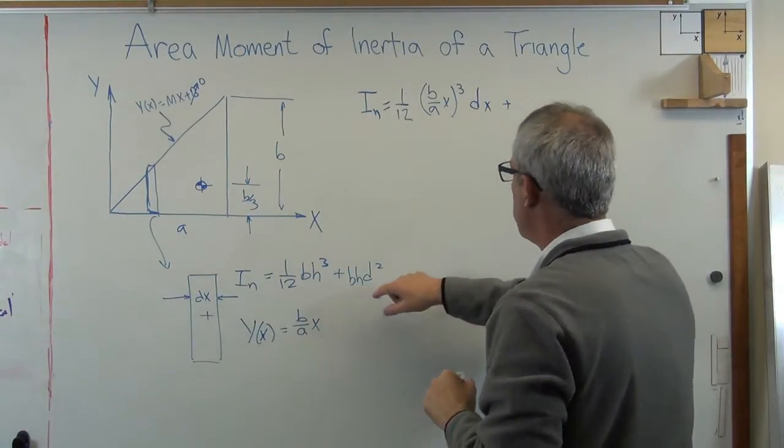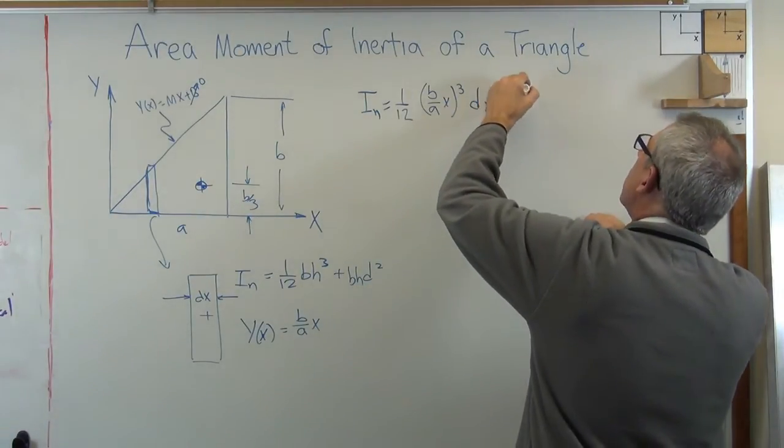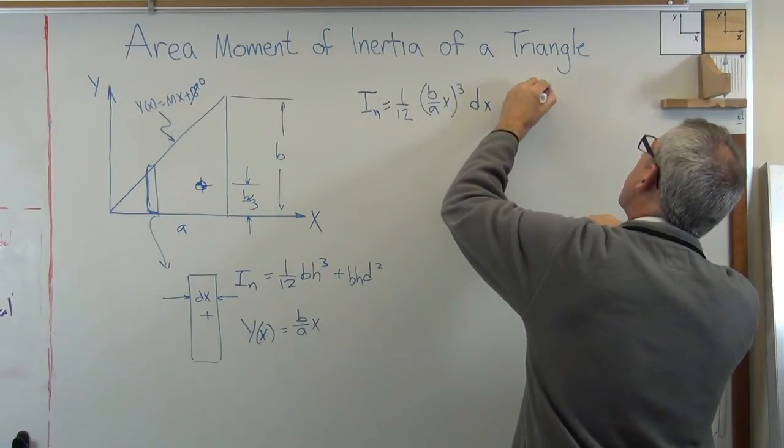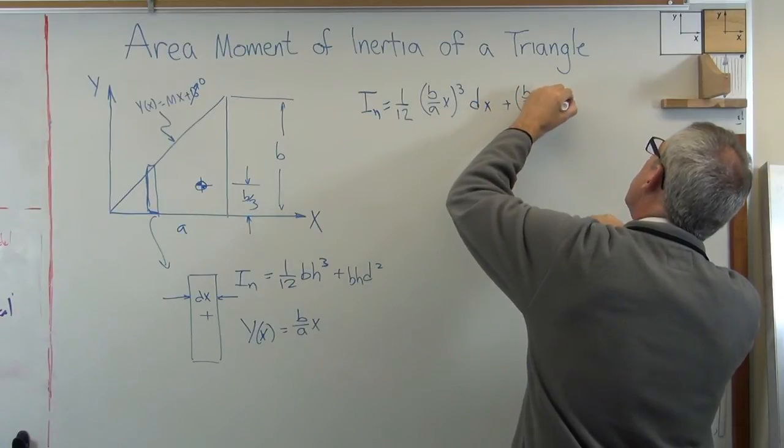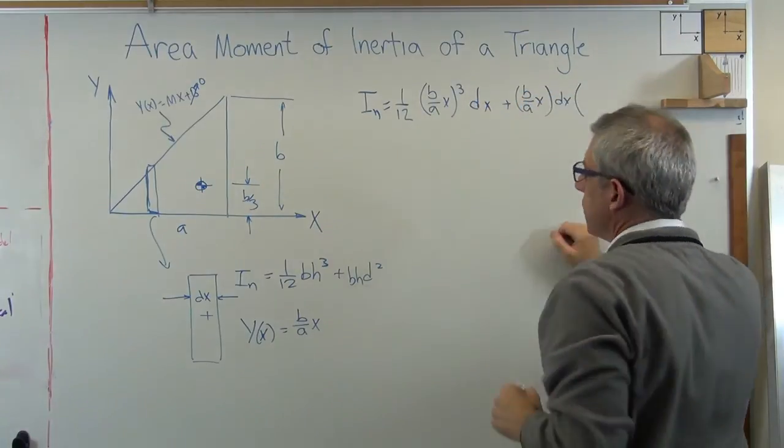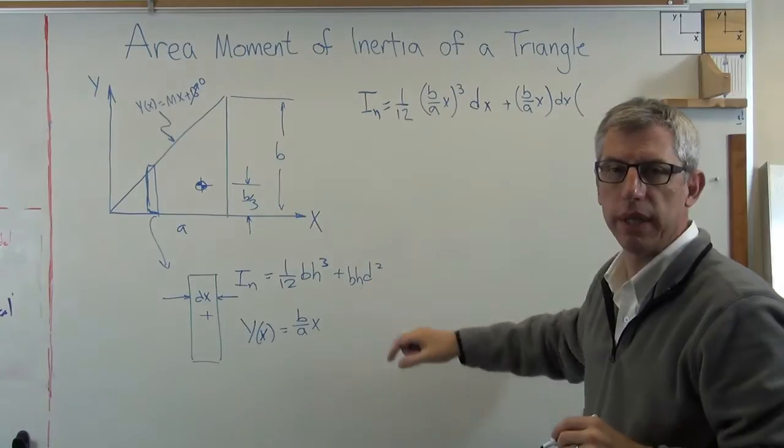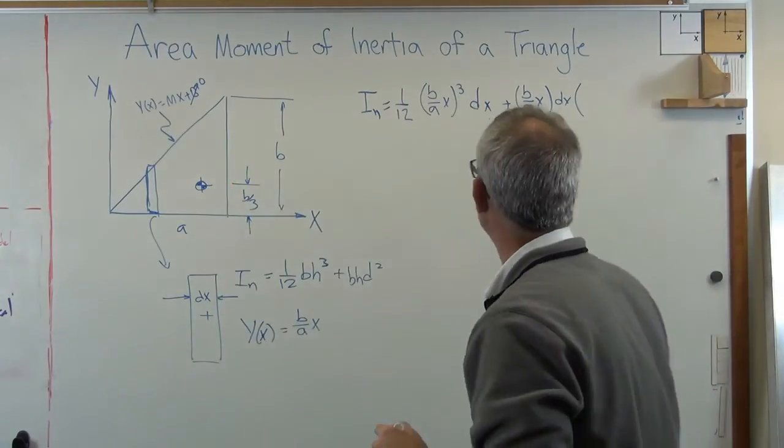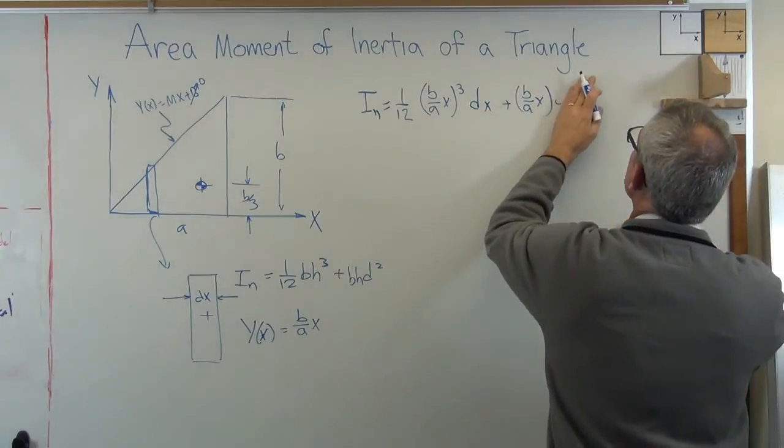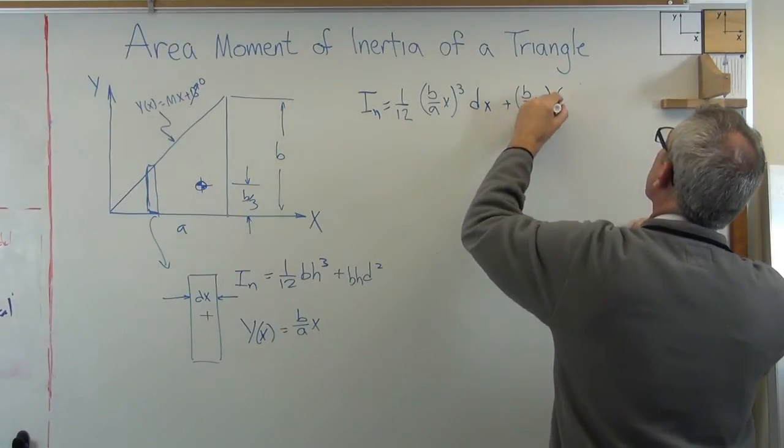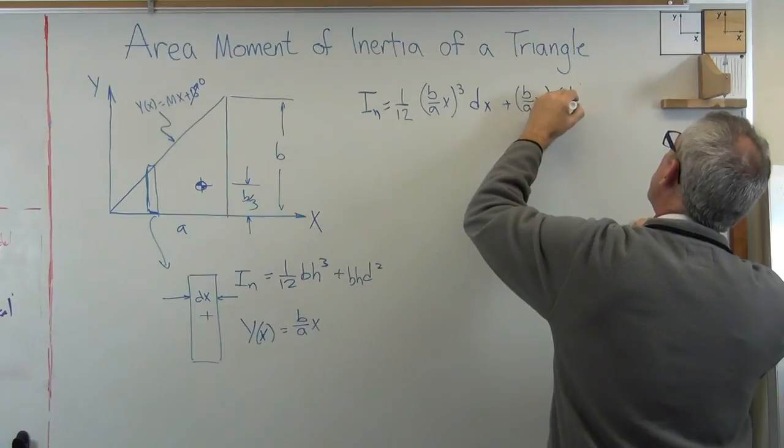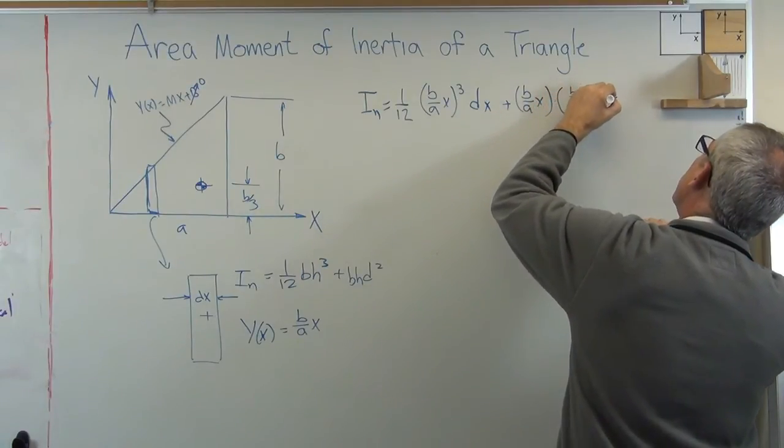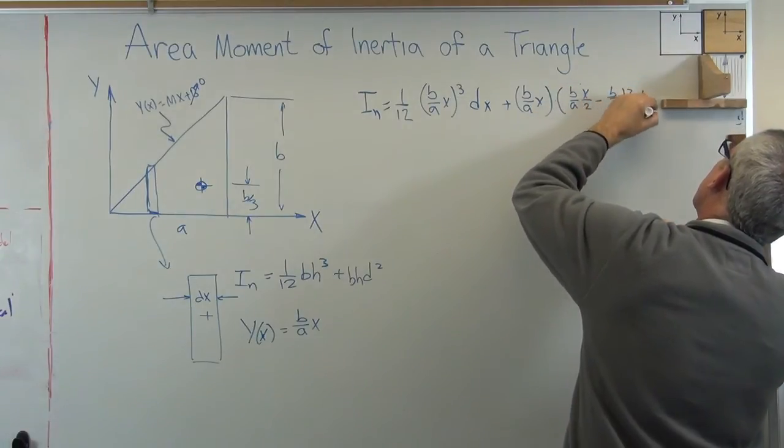Base times height cubed plus base times height again. So, b over a times x times dx again. Now, d squared. D is the distance. It's one-half of h minus b over 3. That's going to be b over a times x over 2 minus b over 3 squared dx.